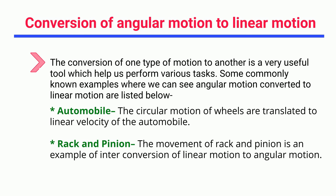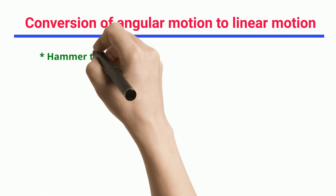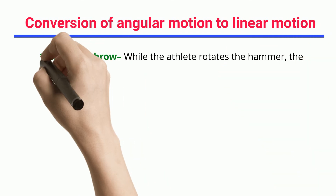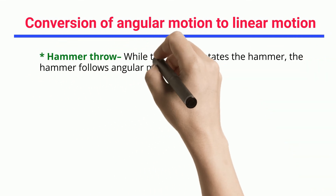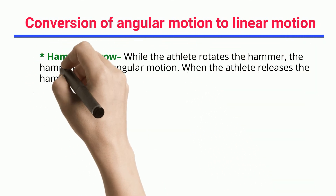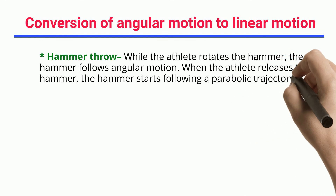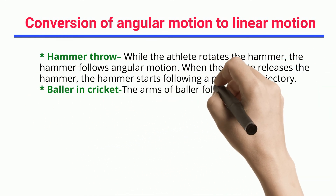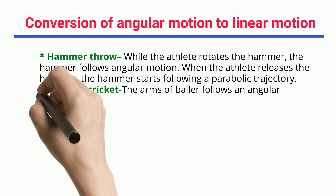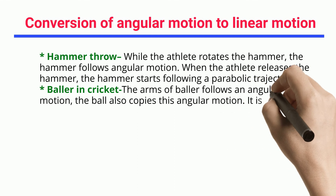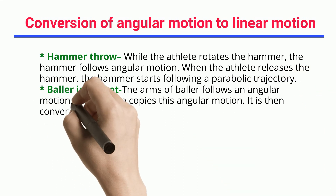Rack and pinion: the movement of a rack and pinion is an example of interconversion between linear motion and angular motion. Hammer throw: while the athlete rotates the hammer, the hammer follows angular motion; when the athlete releases it, the hammer starts following a parabolic trajectory.